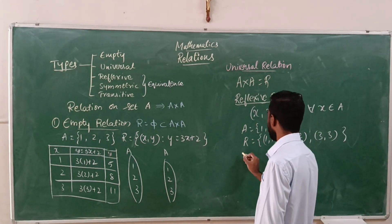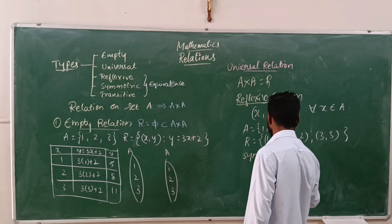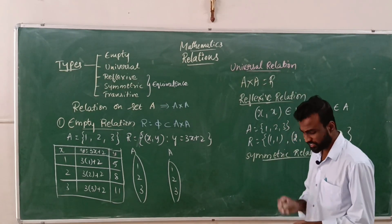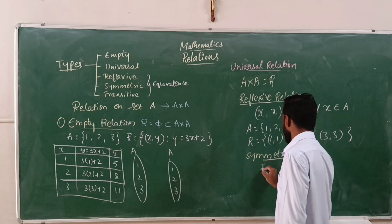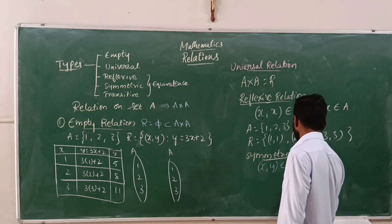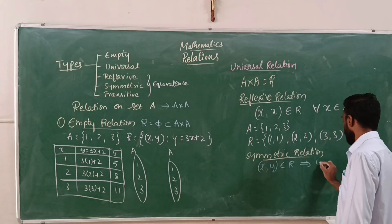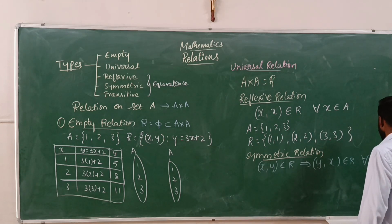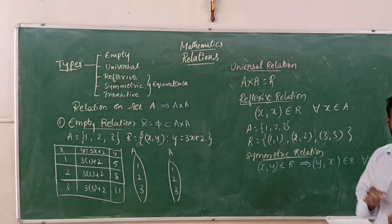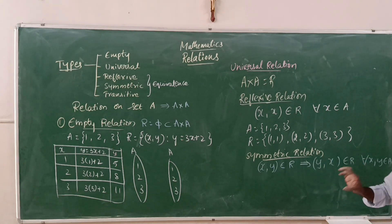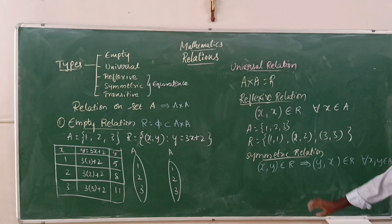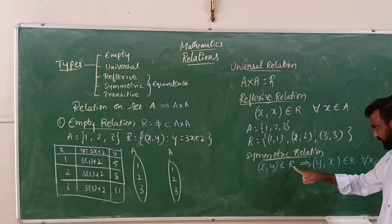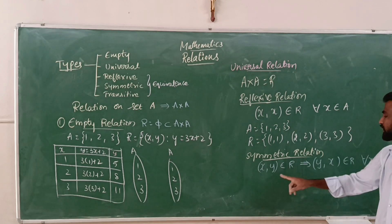Now we discuss symmetric relation. Symmetric relation is very simple: if (x, y) belongs to R, this implies (y, x) also belongs to R, for all x, y belonging to A. In simple words, our input and output should be from set A, and a relation is symmetric if whenever we have (x, y) in R, there should also be its opposite (y, x) in R.